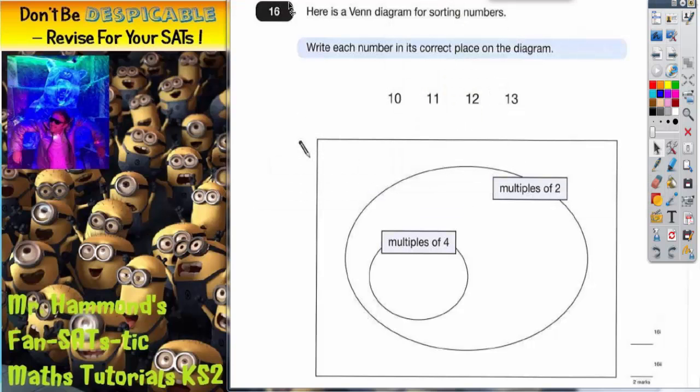Okay, question 16. Here's a Venn diagram for sorting numbers. We've got to write each number in its correct place on the diagram. Let's have a look. In this large oval here we've got multiples of 2.